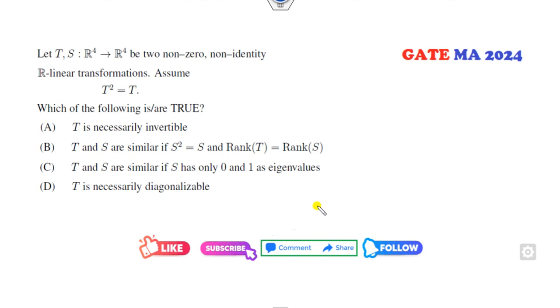Today I will explain how you can solve question number 51 with the help of shortcut tricks. It is given that T and S are non-zero